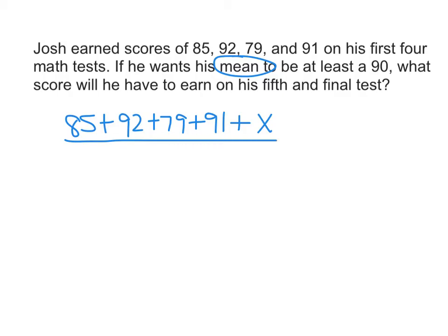And then we have to divide it by how many scores there are. And he's going to have five tests total, so we're going to divide that by five. And that should equal what we want the average to be, which in this case would be 90.